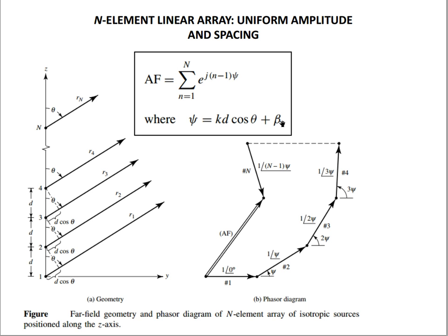For the broadside array, beta is zero. For maxima in both directions, psi equals zero. If I want a maxima at theta equal to 90 degrees for a broadside array, then psi equals zero, which makes beta equal to zero. At theta equal to 90 degrees, you will get beta equal to psi, which is zero.